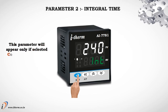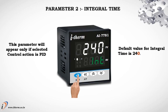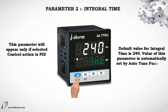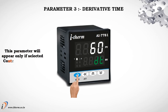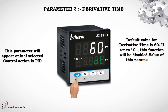Parameter 2 is Integral Time. This parameter will appear only if the selected control action is PID. The default value for integral time is 240, and it is automatically set by the Auto-Tune function. Parameter 3 is Derivative Time. This also appears only in PID mode. The default value is 60. If set to 0, this function will be disabled. Its value is also automatically set by the Auto-Tune function.